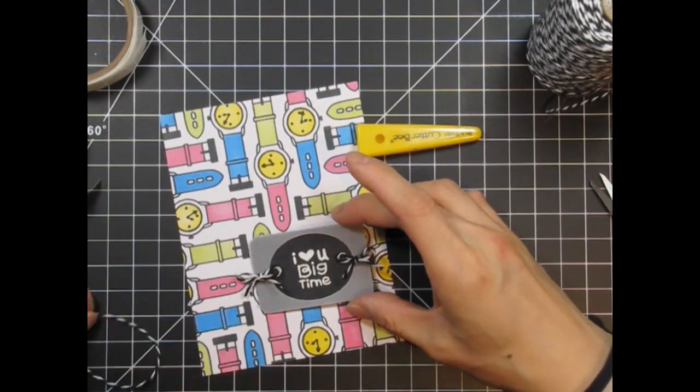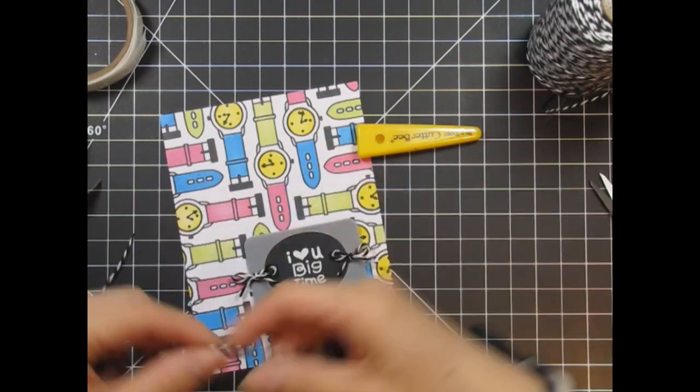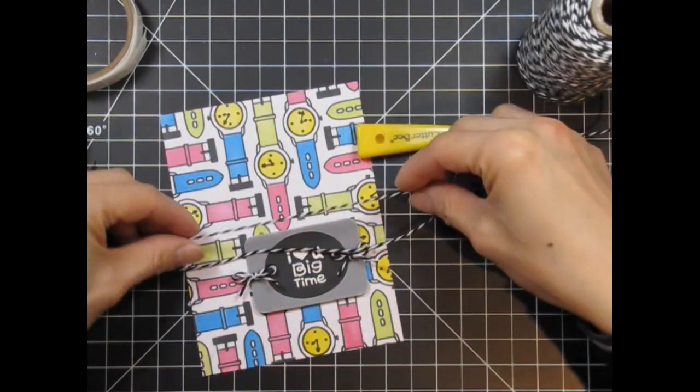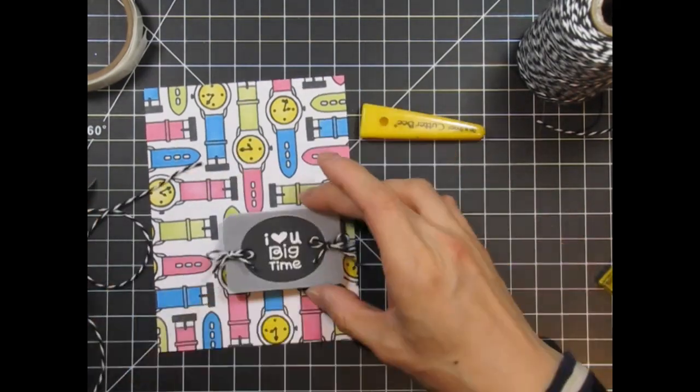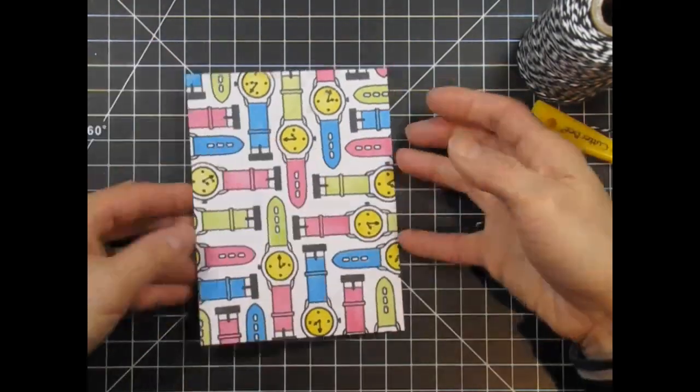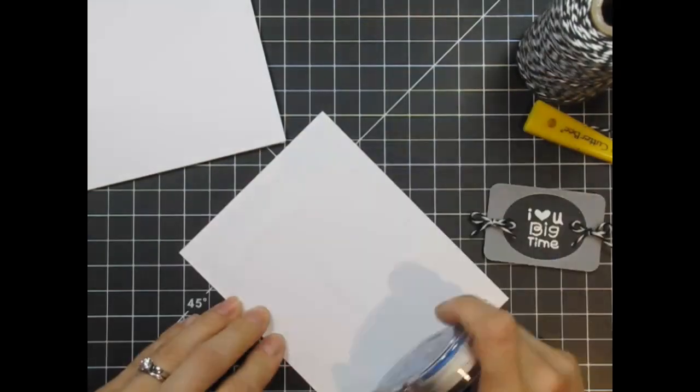I think about tying twine around the entire panel, but after visualizing it I decide it's too much. I do think about it a second time, but I end up just adding foam tape to the back of the sentiment panel. Before adhering that, however, I'm going to adhere the background to the card base.